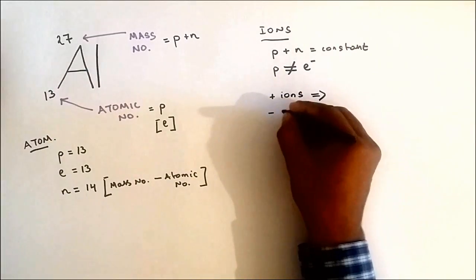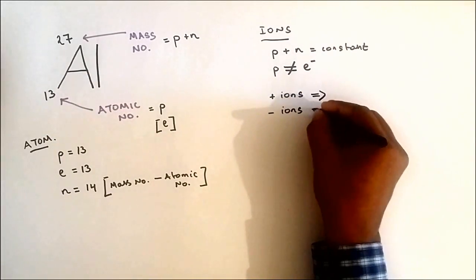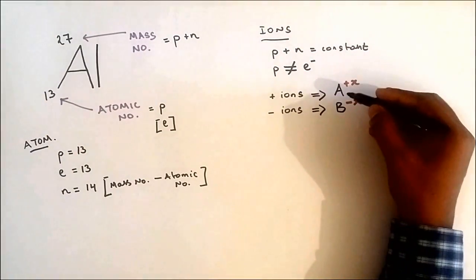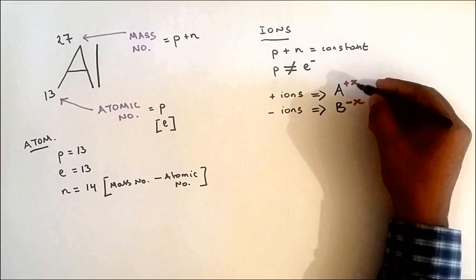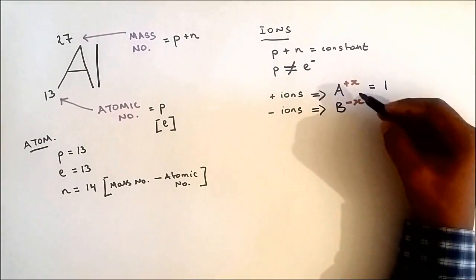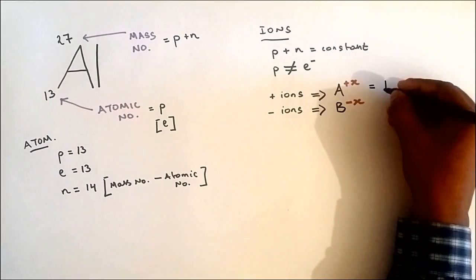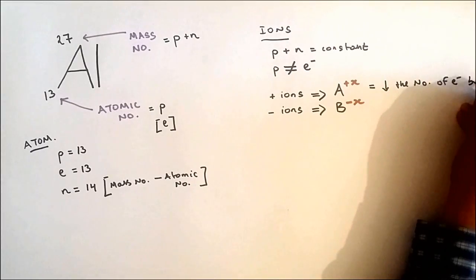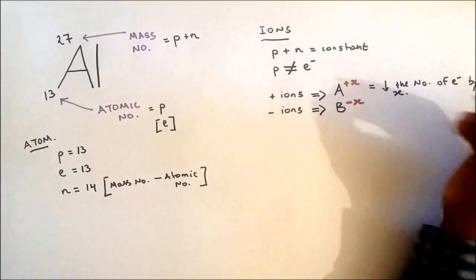Positive ions and negative ions. If you have a positive ion with the number x on the top, for example, if you want to find the number of electrons, then decrease the number of electrons by that x number.